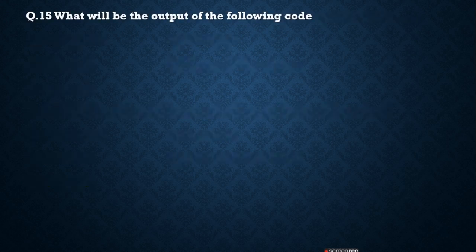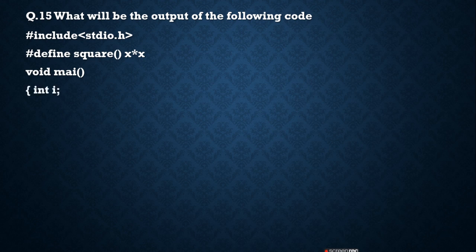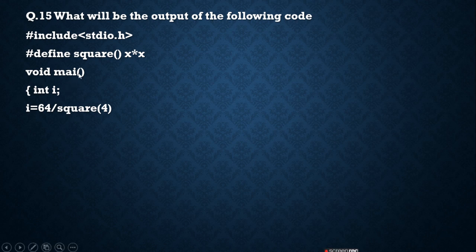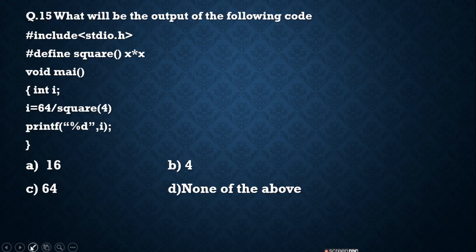Next question is based on the output of the following code — this type of question is common in exams and interviews. The program has: #include <stdio.h>, then #define square(x) x*x. In main, int i = 64 / square(4); then printf("%d", i). Options are: A) 16, B) 4, C) 64, D) none of the above.